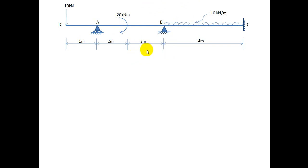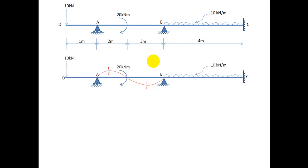So, first step — we will go for drawing the free bending moment diagram. Here, first of all, we will draw a deflected shape because of the application of this clockwise moment. So here I have drawn this deflected shape. Here, the top of the beam is in tension and the bottom is in compression. Here, the top of the beam is in compression and the bottom is in tension.